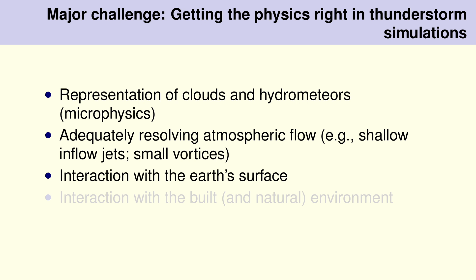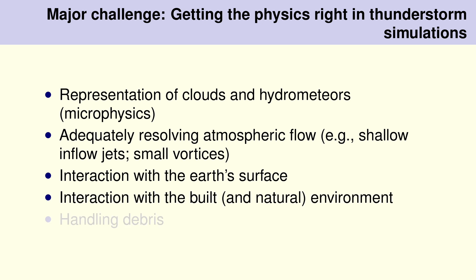Interaction with the Earth's surface — we're terrible at that with meteorological models. The Earth surface is flat in the model, a lot of things have been simplified. But that's okay because there's still a lot of things we can learn. And of course the group interaction with the built environment and the natural environment — we do that terribly in cloud modeling. We really don't have trees and buildings being hit by our cloud model-generated tornadoes, and that's something I hope to change in the last 10 to 15 years of my career.